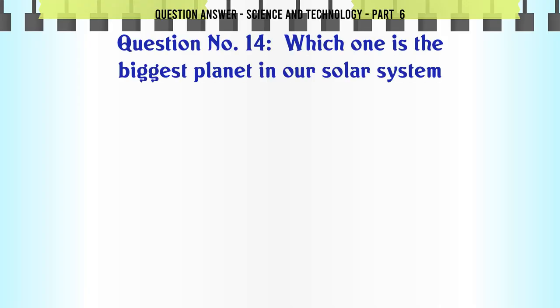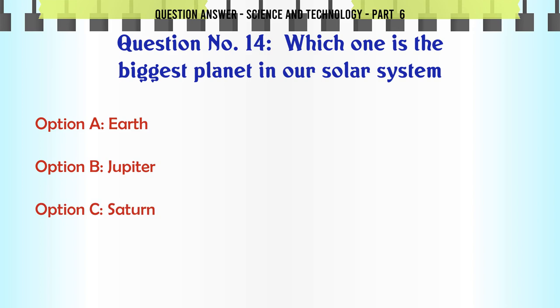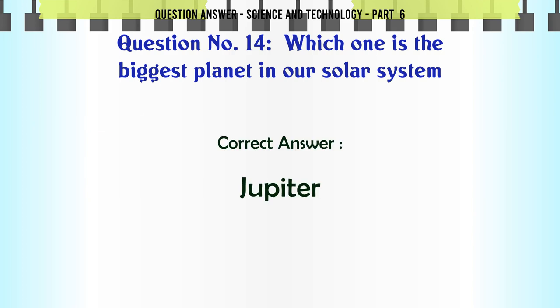Which one is the biggest planet in our solar system? A. Earth. B. Jupiter. C. Saturn. D. Mercury. The correct answer is Jupiter.